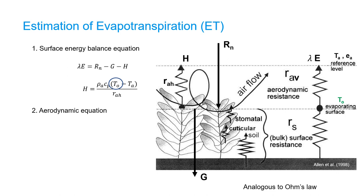Aerodynamic equation is analogous to Ohm's law for electrical current flows, where TA and T-node are equivalent to electrical potentials or voltages, and RAH is equivalent to electrical resistance.